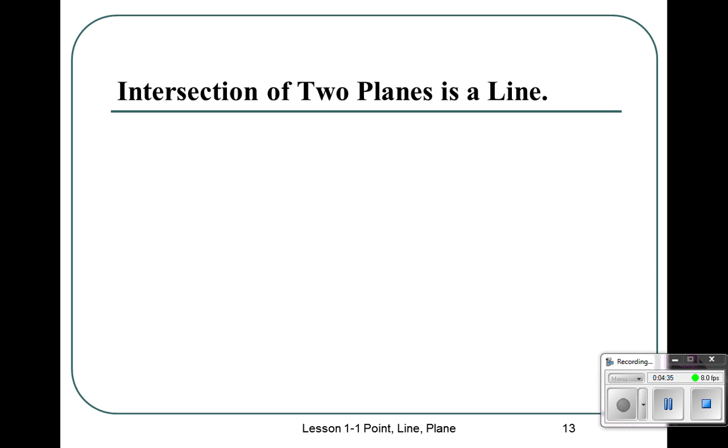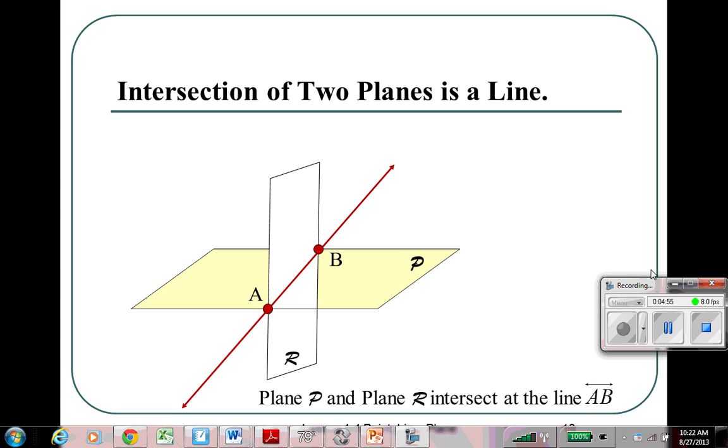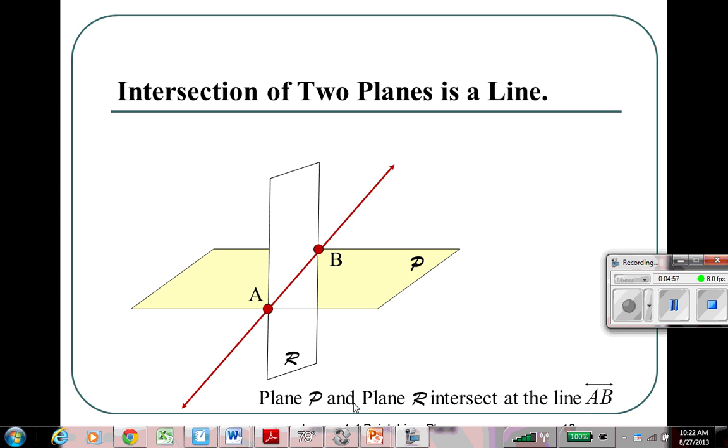Now, intersection of two planes is a line. We have one plane, P. And the second plane intersecting it is R. The two planes will intersect at the line AB. So, we say that plane P and plane R intersect at line AB. Or we say line AB is the intersection of planes P and R.